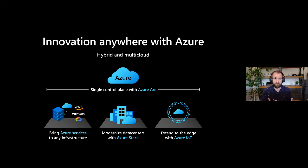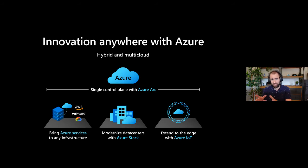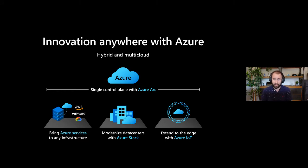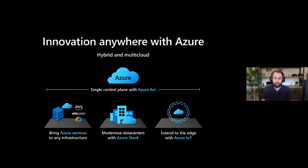Then we have Azure Arc - and this is where Arc first comes in. We understand customers have reasons why they cannot use Azure services in an Azure region. So if they can't use them there, let's make Azure services go to them - to their location - so they can build hybrid solutions wherever they need them. Even if they want to run services outside of Azure, on premises, at the edge, or at another cloud provider, they can do that.